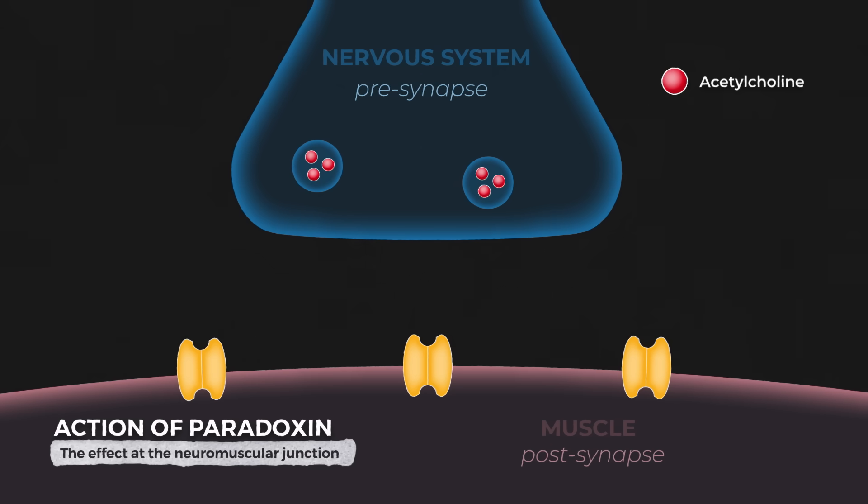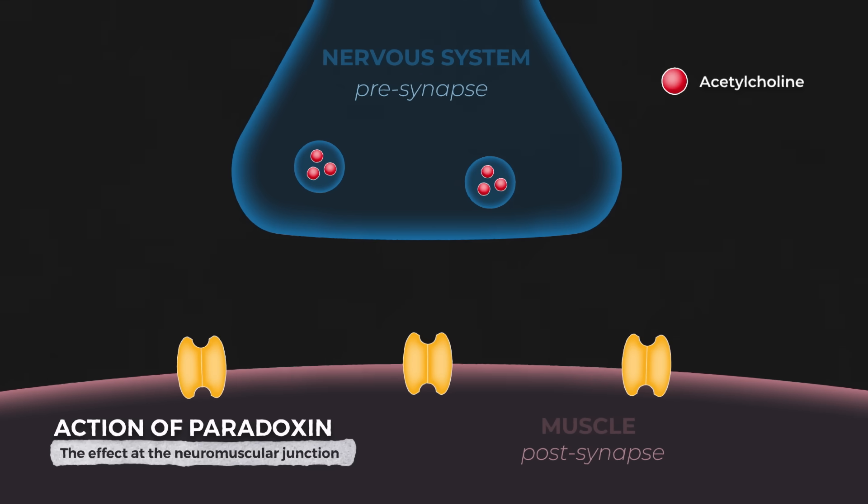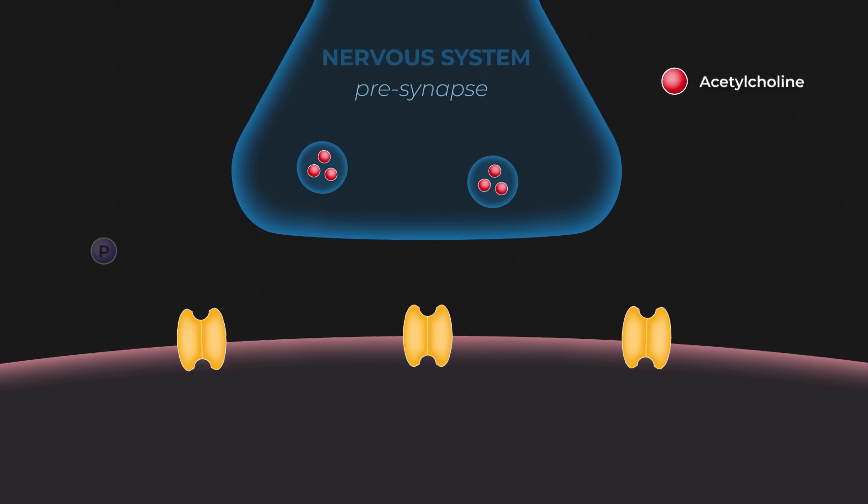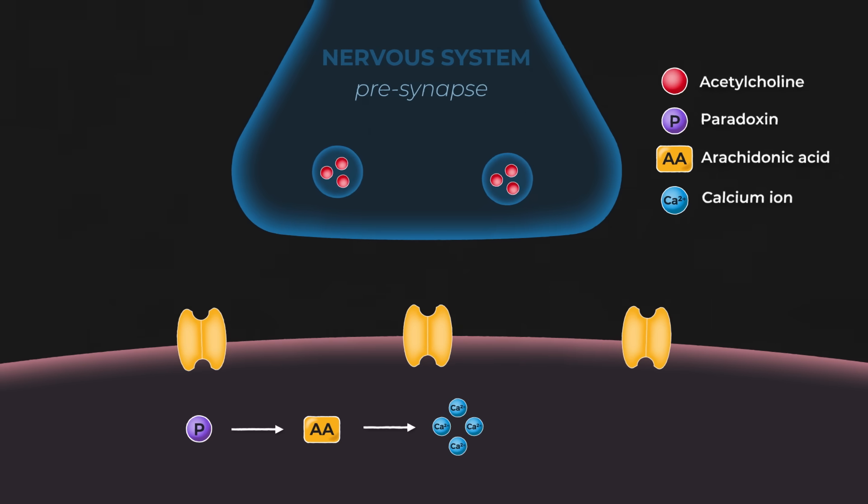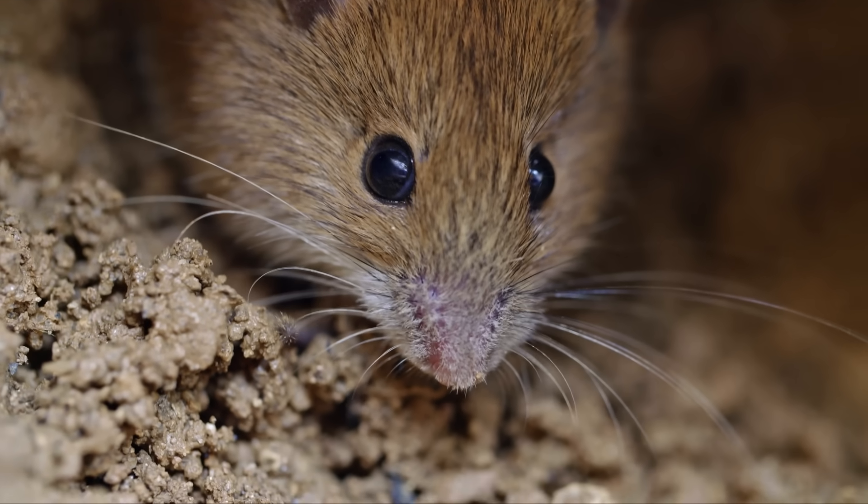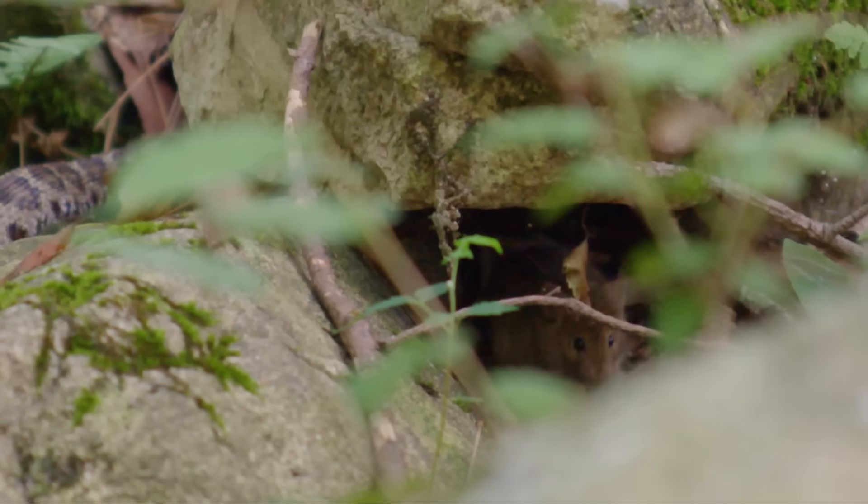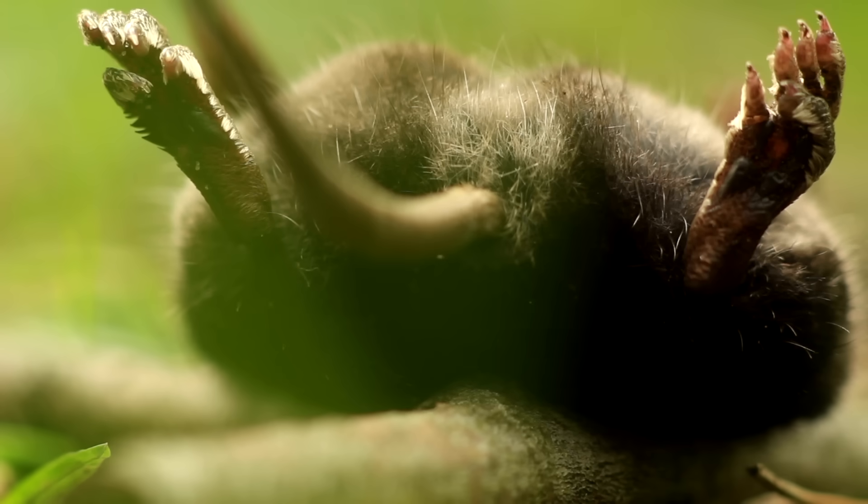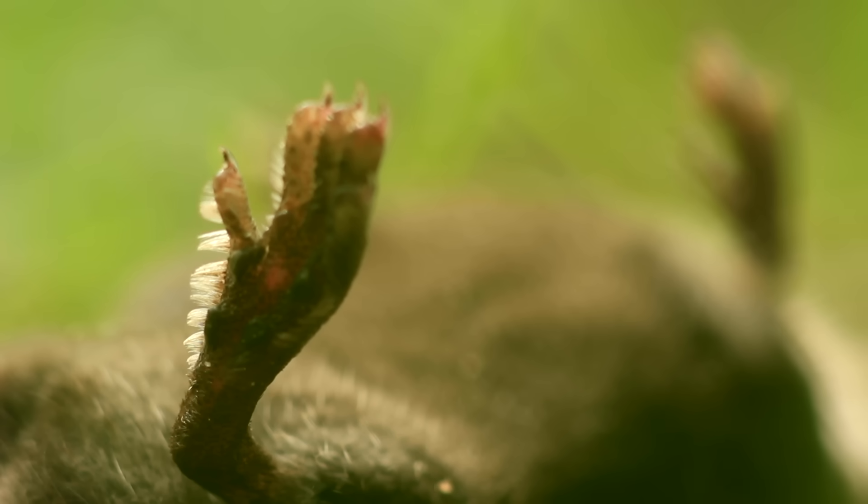But this isn't the only problem caused by paradoxin. If it gets into the post-synapse, it can also deactivate acetylcholine receptors completely. Again, the same thing happens. In the end, phospholipids are broken down into arachidonic acid, which causes a massive release of calcium ions. But this time, the calcium ions activate enzymes which turn off the acetylcholine receptors, even causing them to be removed from the cell membrane for a number of hours. The result of all of this is a complete and irreversible shutdown of the neuromuscular junction. The brain can't consciously or unconsciously communicate with the muscles, and the body is totally paralyzed. The lungs can't inflate, the heart stops beating, and the animal dies of respiratory failure.